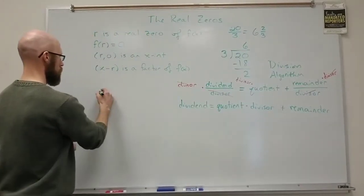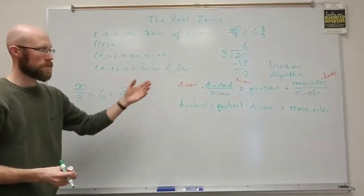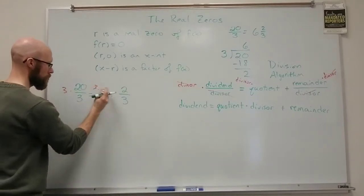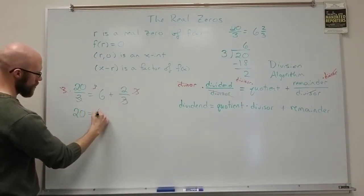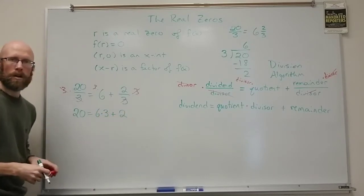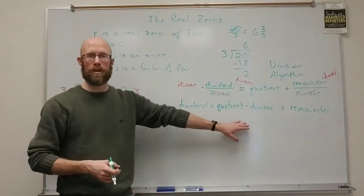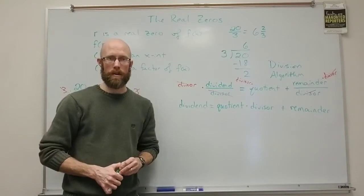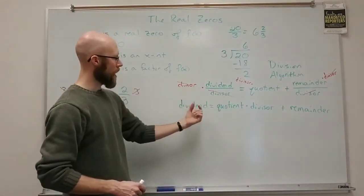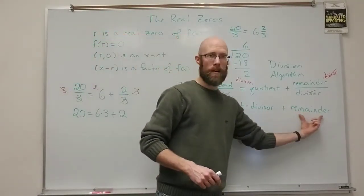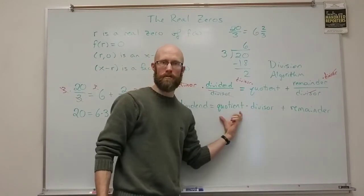For example: 20 over 3 equals 6 plus 2 over 3. If I multiply both sides by 3, the threes cancel, and you're left with 20 equals 6 times 3 plus 2. That works out: 6 times 3 is 18 plus 2 gives me 20. We now have a version of the division algorithm with no fractions and no actual division. In order for the divisor to be a factor of the dividend, the remainder would have to be zero — then the dividend is just quotient times divisor, and those two things are the factors.